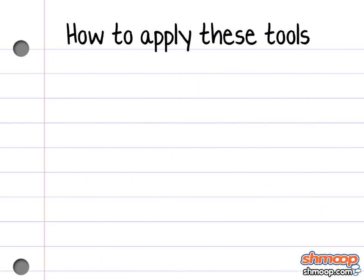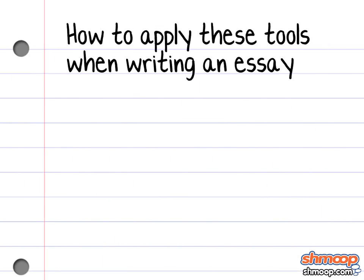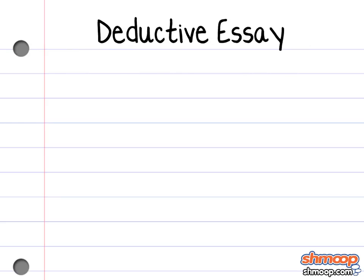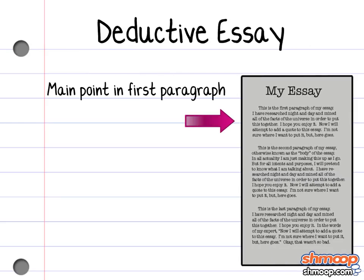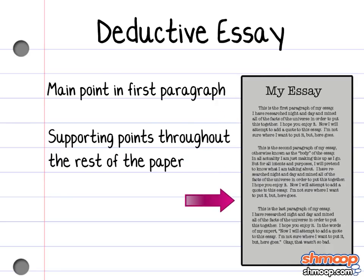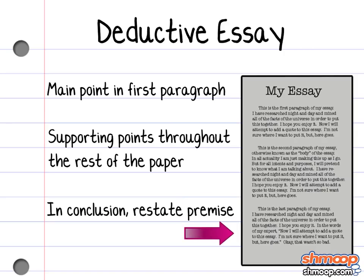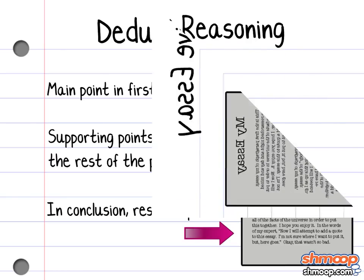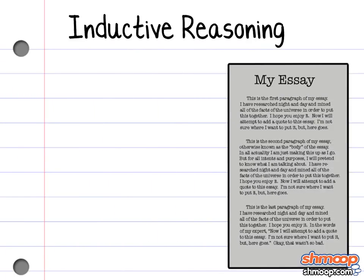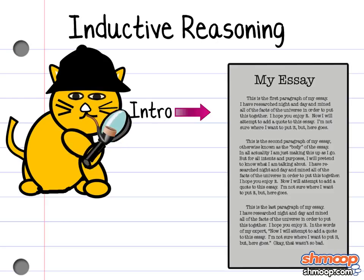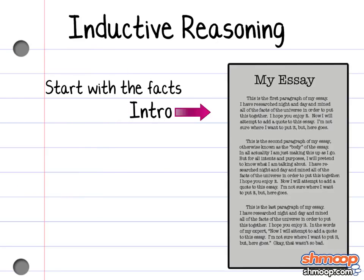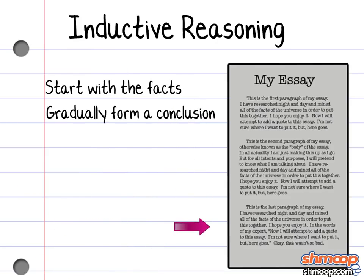So, how do you apply these tools when writing an essay? If writing a deductive essay, you'll want to make your big statement right up front, and then spend the rest of the paper providing evidence that supports your statement. In your conclusion, you can restate your premise and then remind the reader how fabulously you just proved your point. When writing an inductive essay, your intro will be a little more mysterious. You're going to start with the facts and gradually string together a conclusion, which will end your essay with a bang.